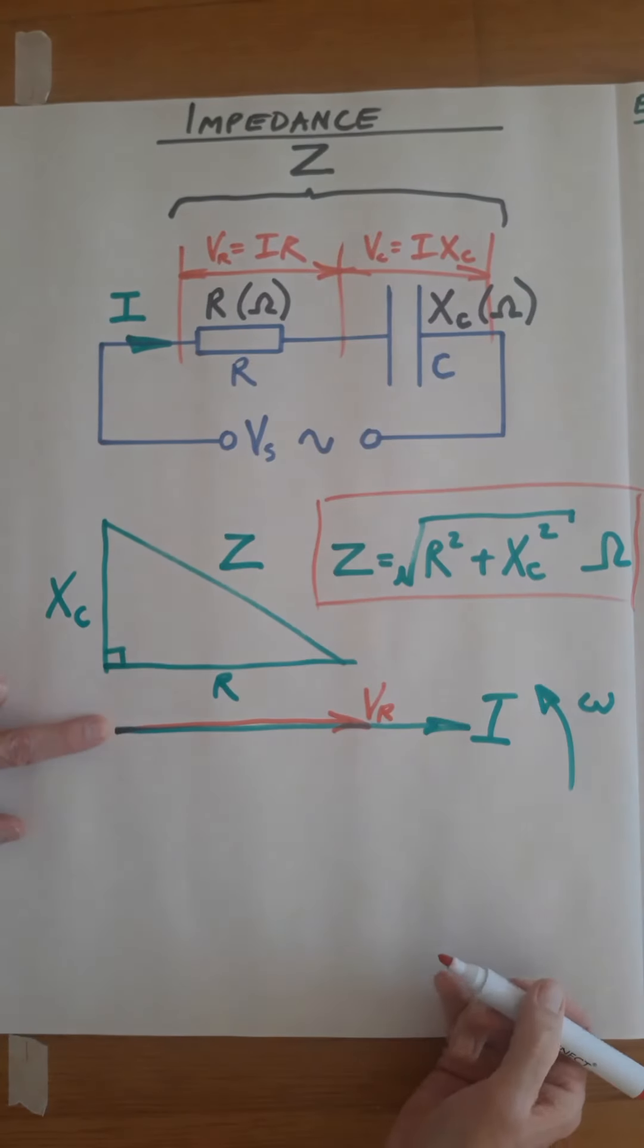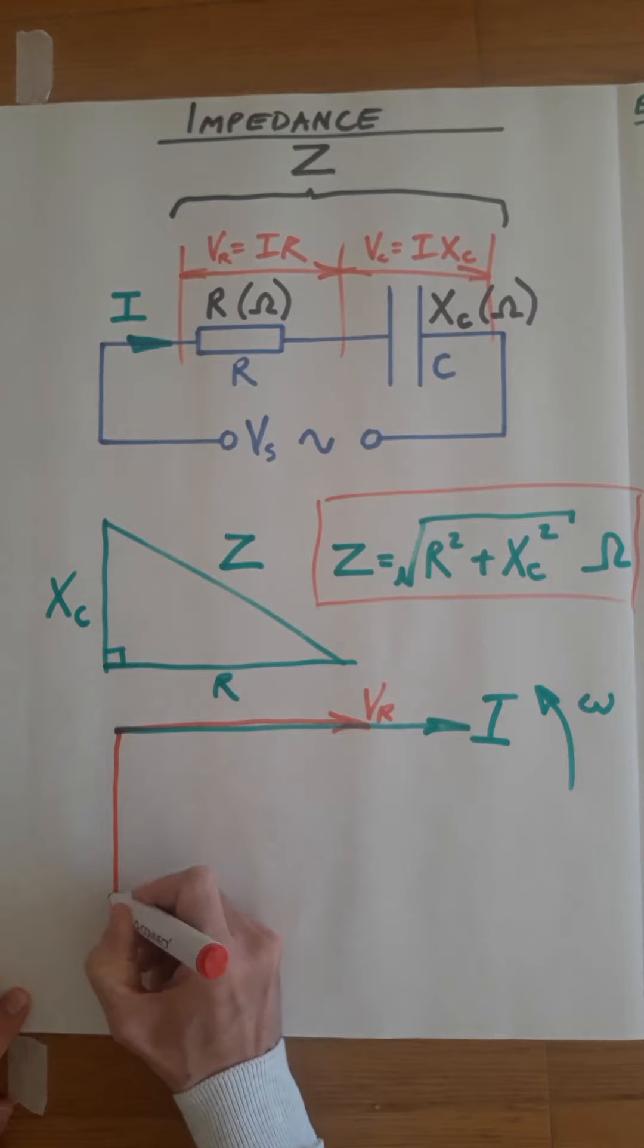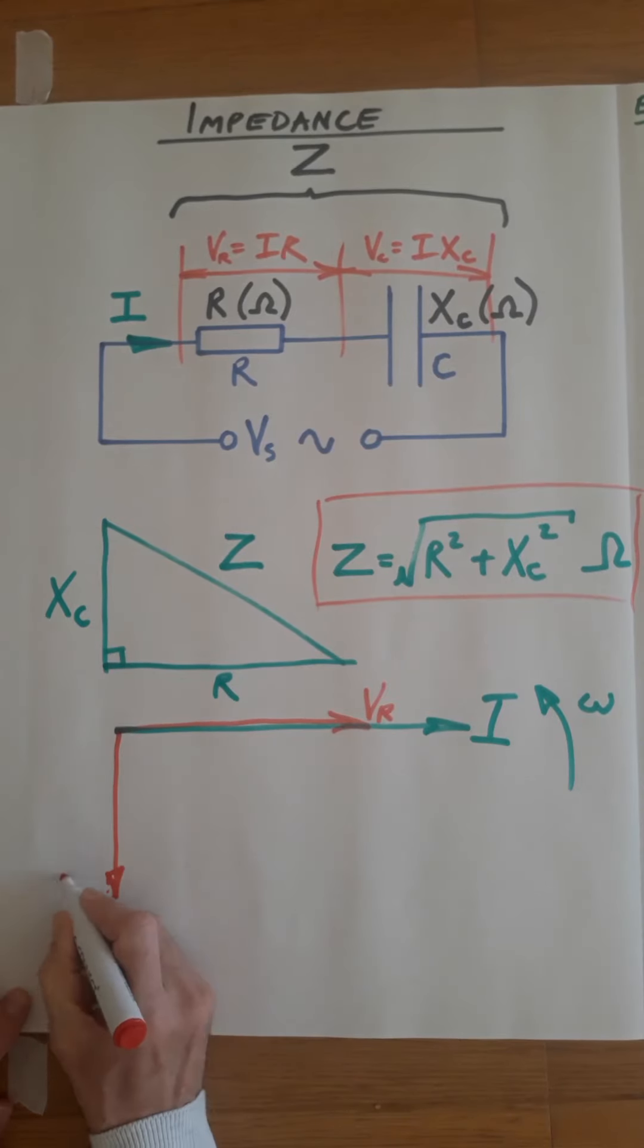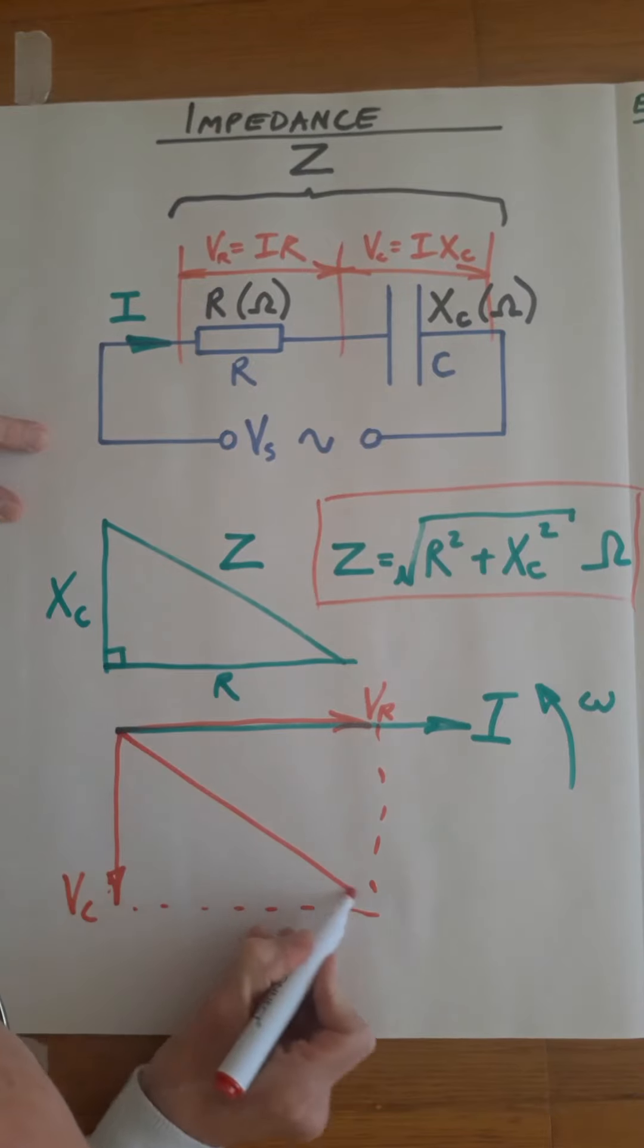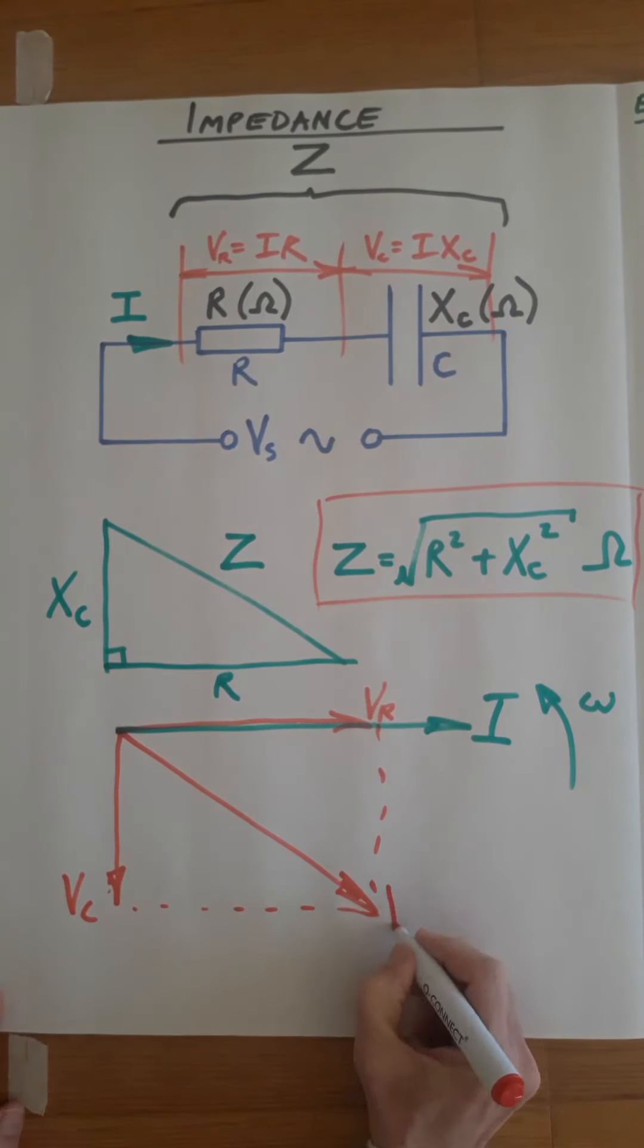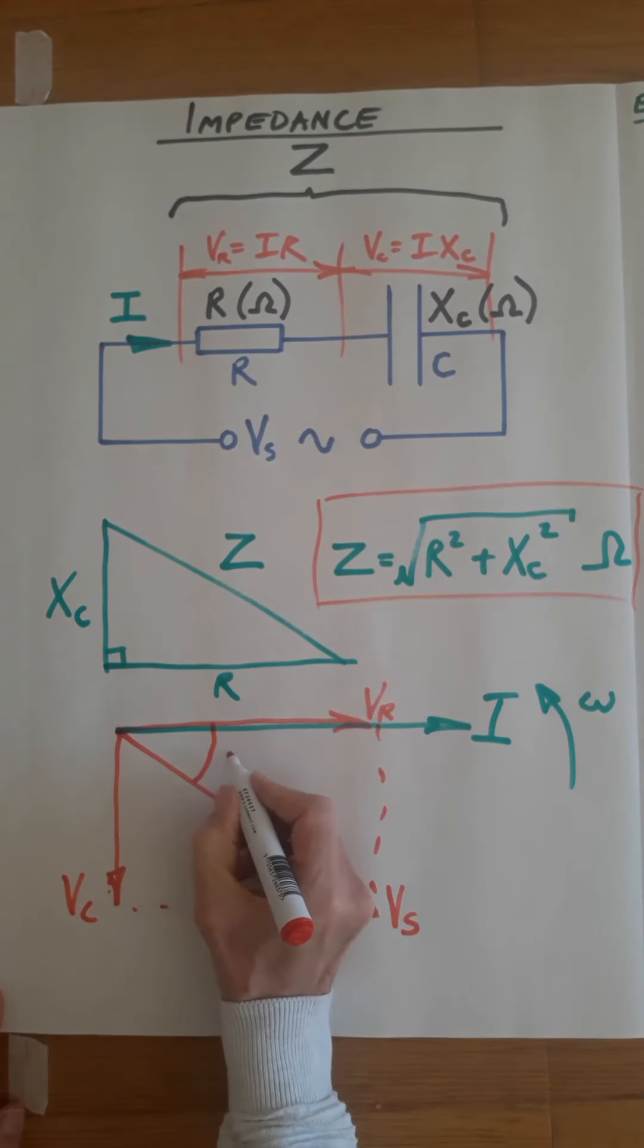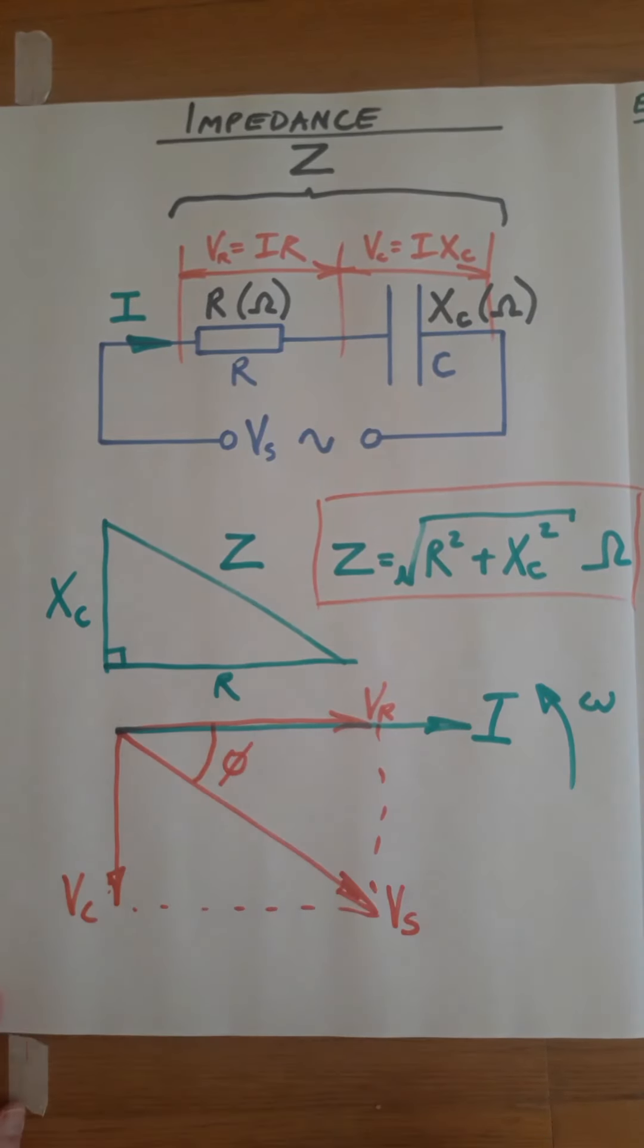There's the voltage across the capacitor, that's 90 degrees shifted. If we do a dot to dot, then this is the supply voltage, and the phase angle is between the supply voltage and the supply current.